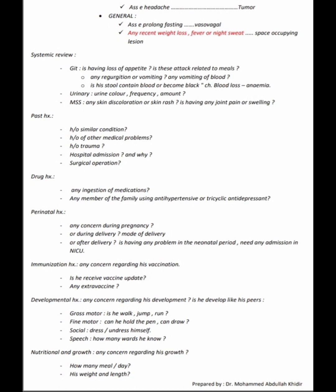Ask generally about prolonged fasting, recent weight loss, fever, or night sweats suggesting space-occupying lesion. In systemic review from the GI tract, ask about loss of appetite, relationship of attacks to meals, regurgitation, vomiting, hematemesis, or black/bloody stools indicating chronic blood loss and anemia. For urinary, ask about urine color, frequency, and amount. For musculoskeletal, ask about skin discoloration, skin rash, joint pain, or swelling.